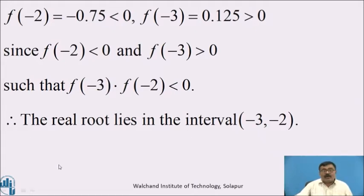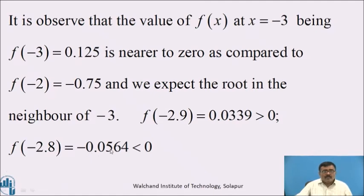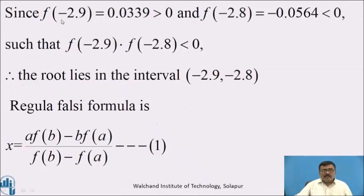To find the smallest interval, it is observed that f(−3) = 0.125 is nearer to 0 as compared to f(−2) = −0.75, and we expect the root in the neighborhood of −3. That is, f(−2.9) = 0.0339, which is greater than 0, and f(−2.8) = −0.0564, which is less than 0. Since f(−2.9) × f(−2.8) < 0, therefore the root lies in the interval [−2.9, −2.8].